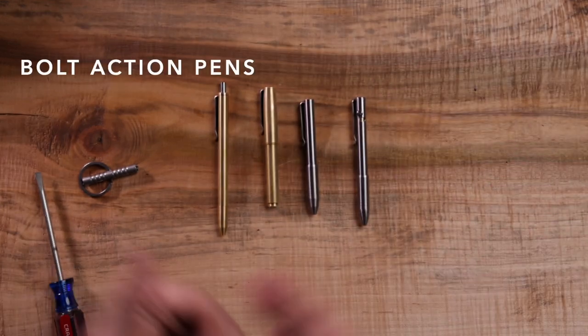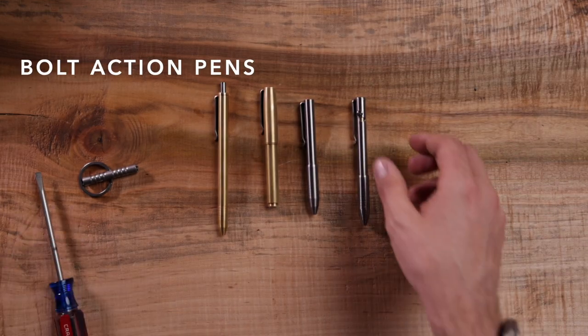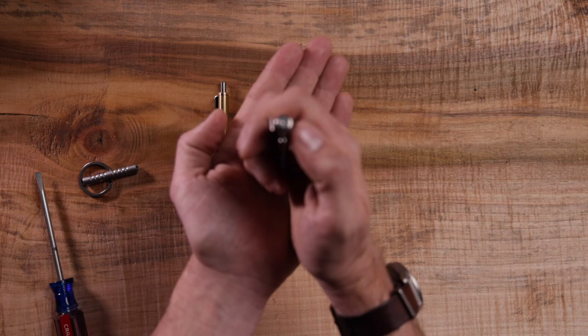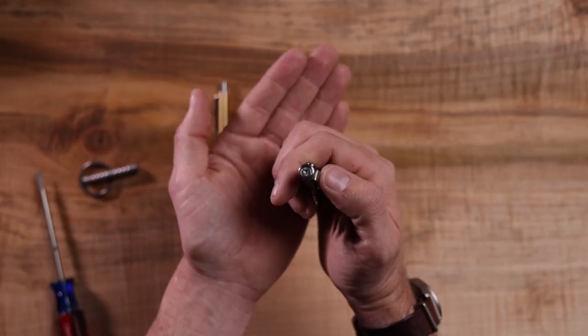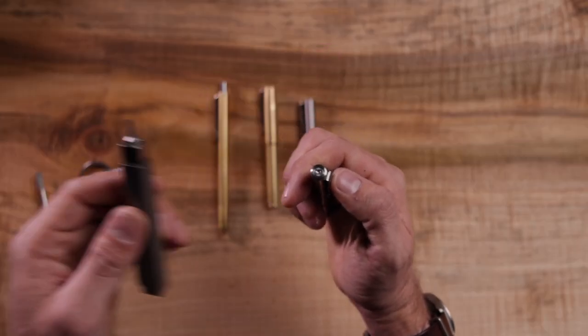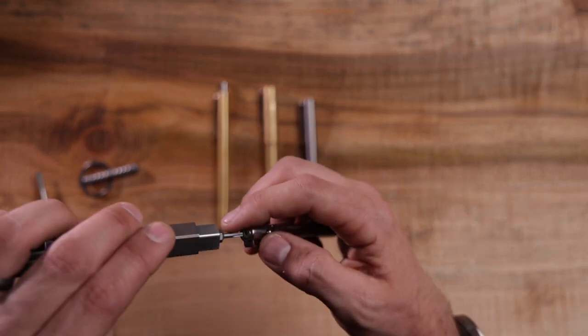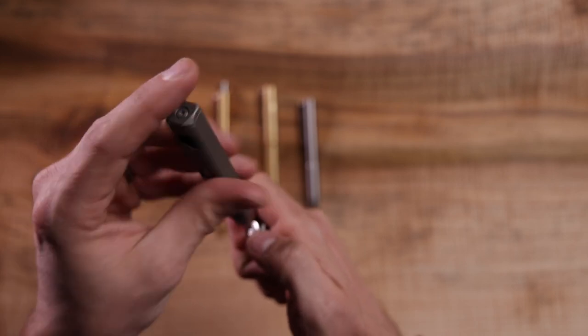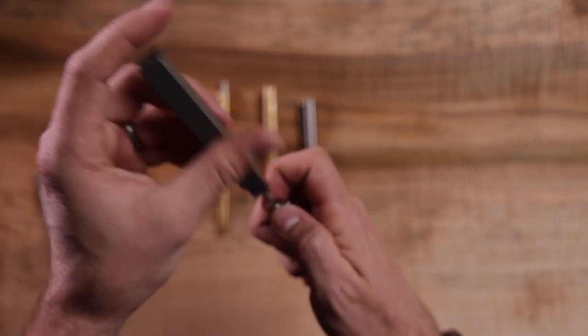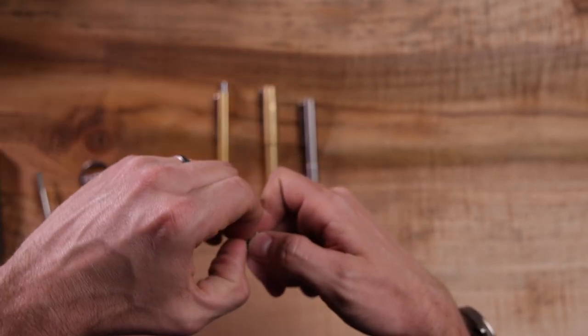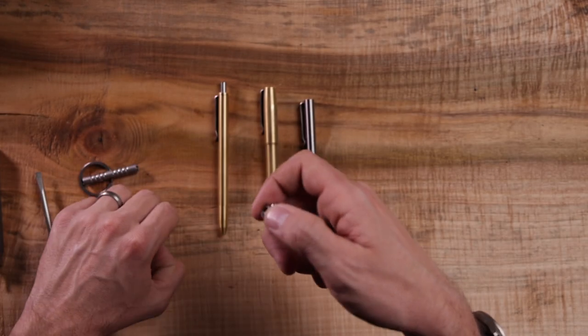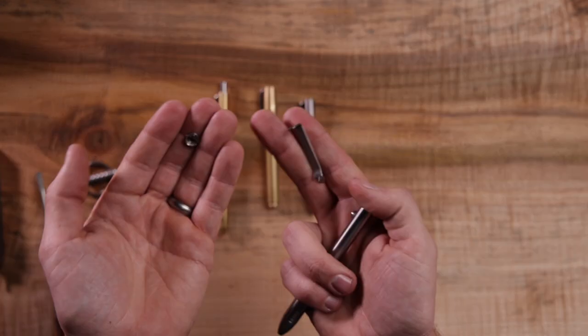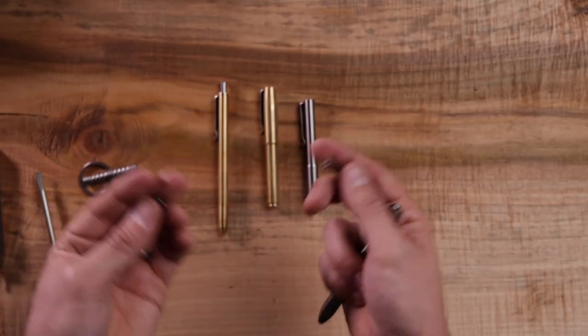On our bolt action pens, they actually use a Torx driver. This is a normal bolt action pen. This is a T8 screw that holds the end cap in. So I'm going to take a T8 screwdriver and just back that screw out. Try not to lose it. Your end cap comes off, clip comes off with it. Make your adjustments, just like the first pen.